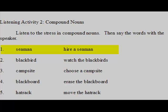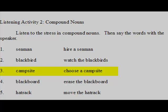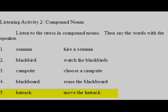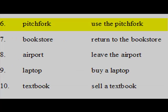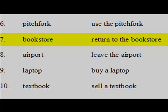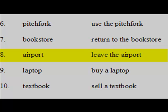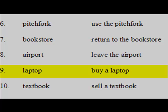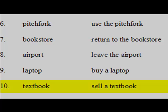1. Seaman — Hire a seaman. 2. Blackbird — Watch the blackbirds. 3. Campsite — Choose a campsite. 4. Blackboard — Erase the blackboard. 5. Hat rack — Move the hat rack. 6. Pitchfork — Use the pitchfork. 7. Bookstore — Return to the bookstore. 8. Airport — Leave the airport. 9. Laptop — Buy a laptop. 10. Textbook — Sell a textbook.